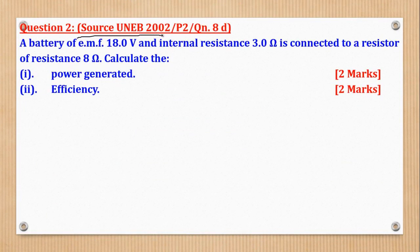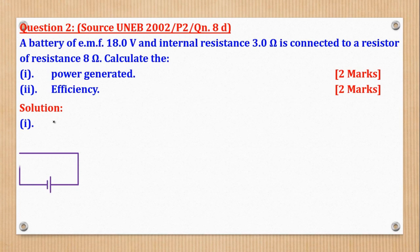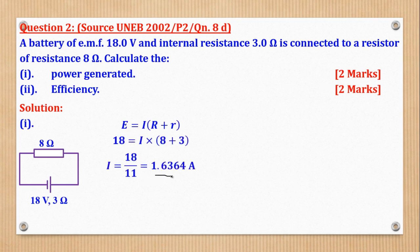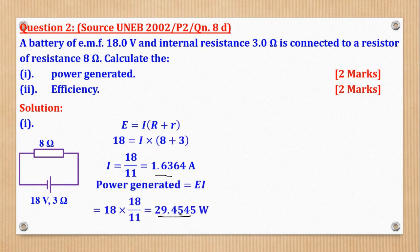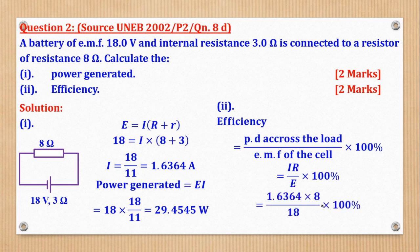Question 2 came from UNEB 2002, paper 2, question 8D. It says: a battery of a given EMF and internal resistance is connected to a given resistor. Calculate: (i) power generated, and (ii) efficiency. The same procedure as question 1 — find the current using I = E/(R+r), then power generated = EI, then efficiency = (IR/E) × 100%.